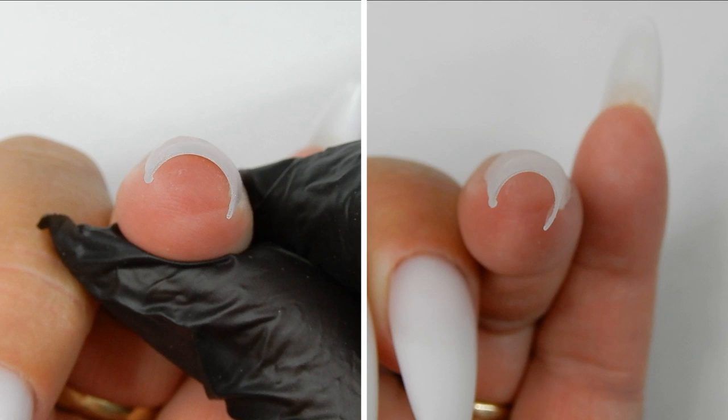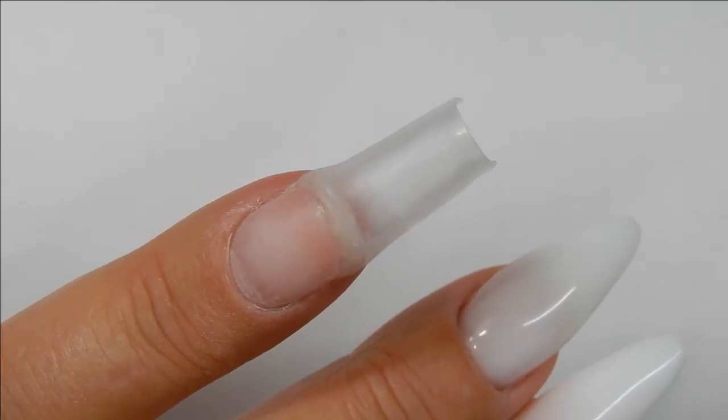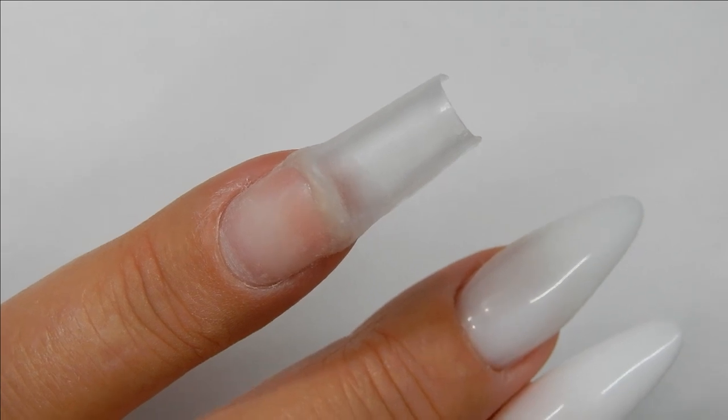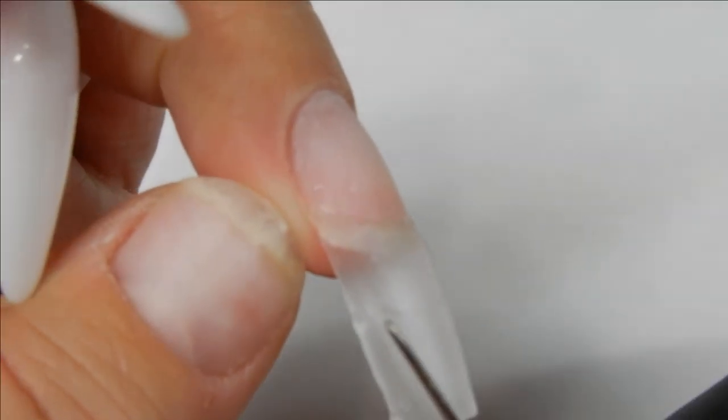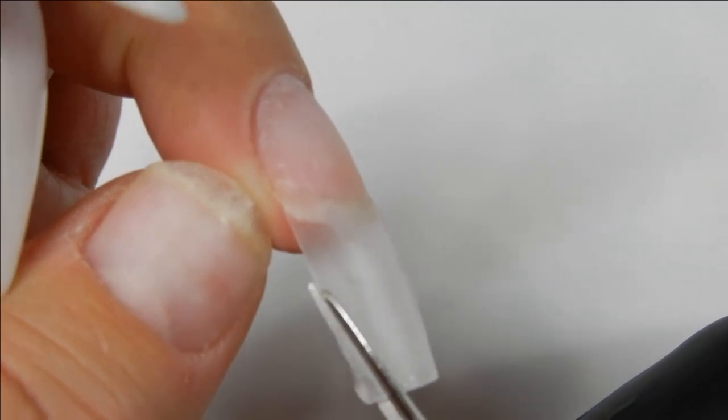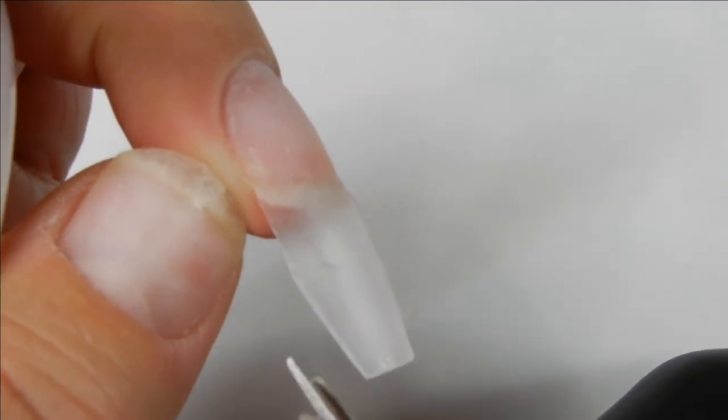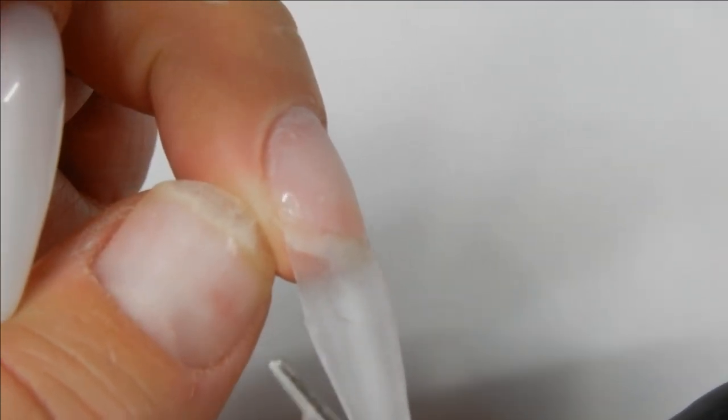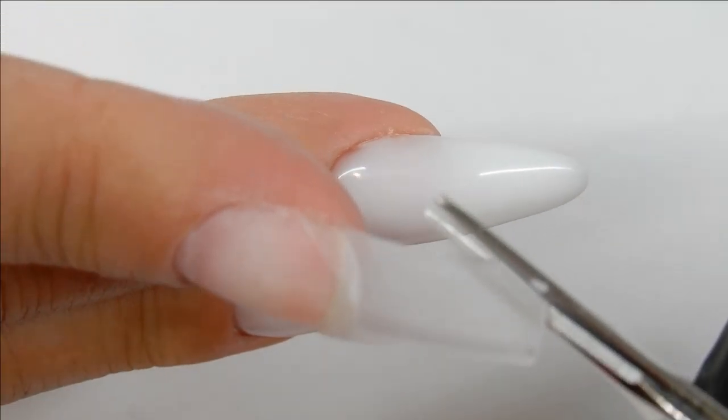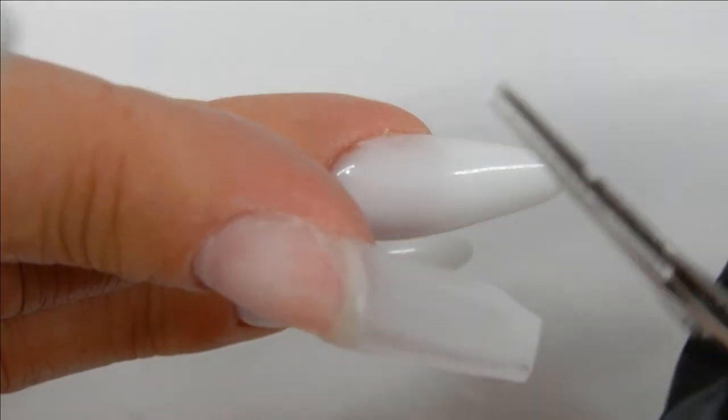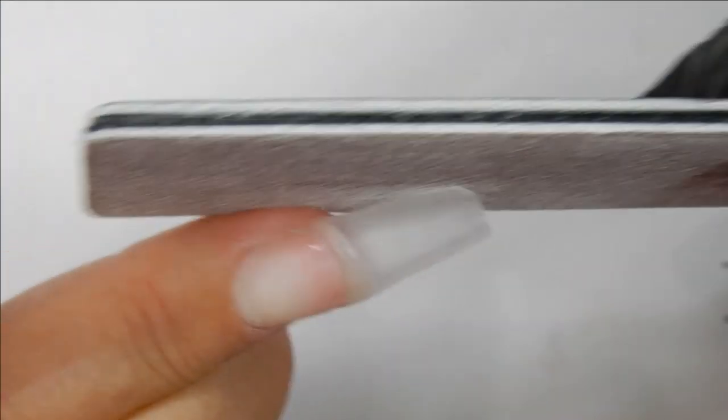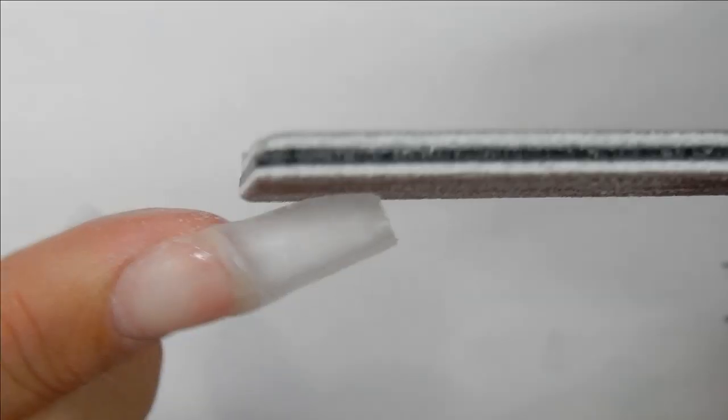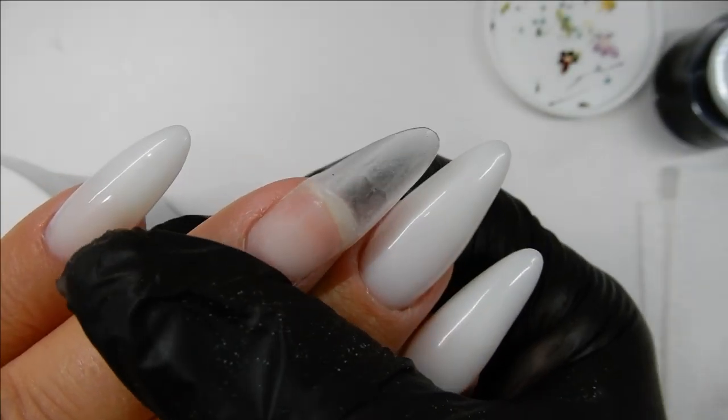I need this tip to be almond shape so it matches my other nails that I'm wearing. So it's still a very thin nail tip here, it's thin enough to where I can still cut it with these small scissors. So I'm just trimming the sides in first just to save filing. And now I will shape the nail into an almond.